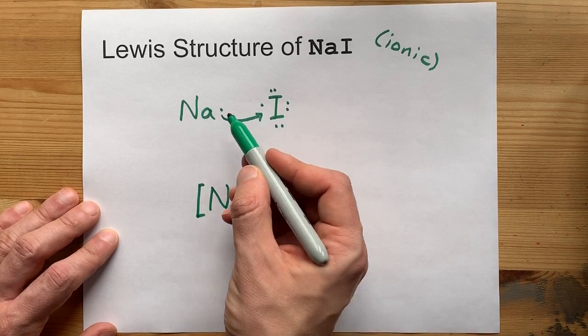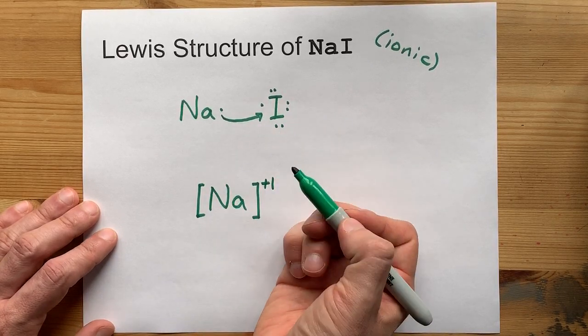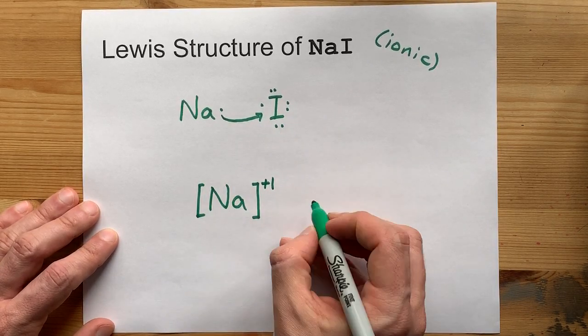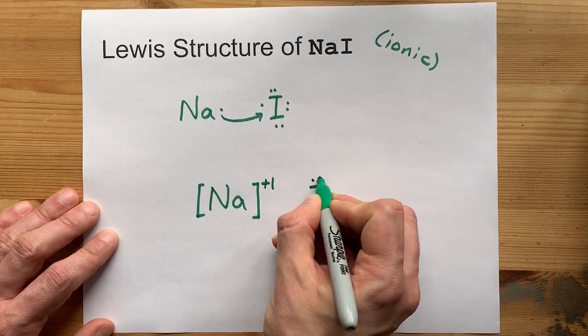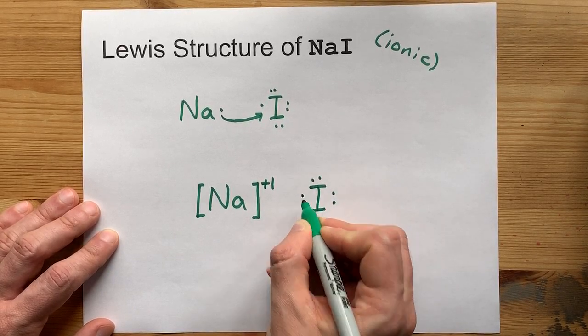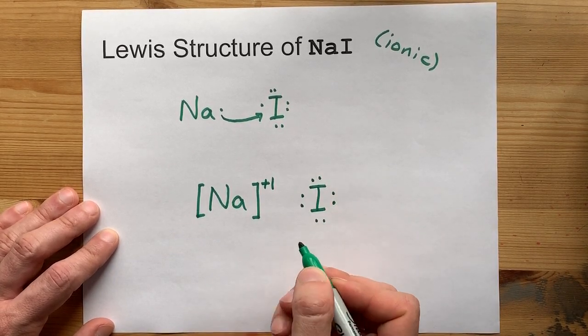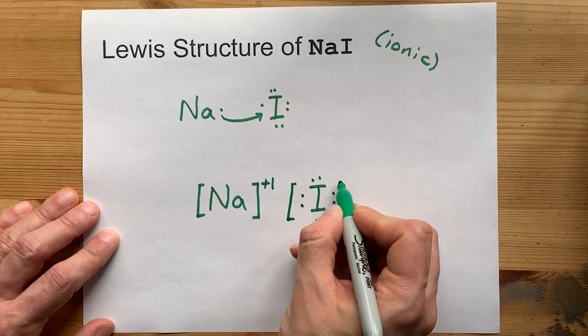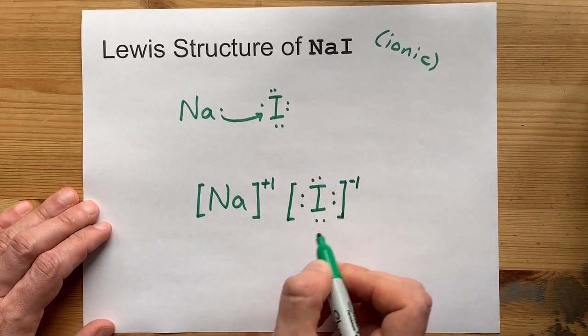These square brackets represent the fact that it is an ion with a charge. And there's no dots around it because it gave away its only outer electron. This iodine brought seven electrons with it and took one from sodium. That gives it a charge as well of minus one.